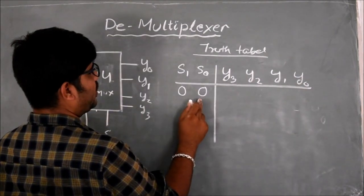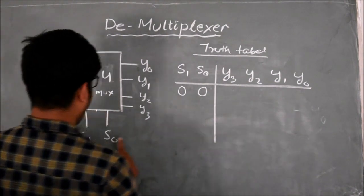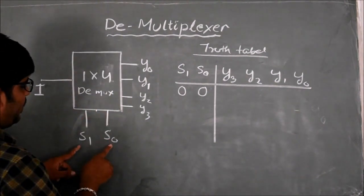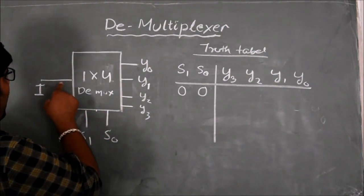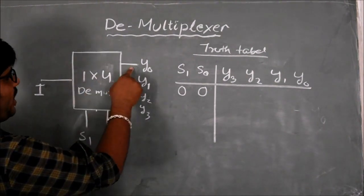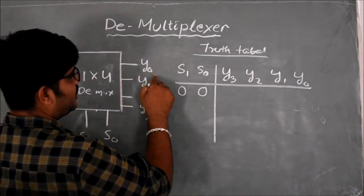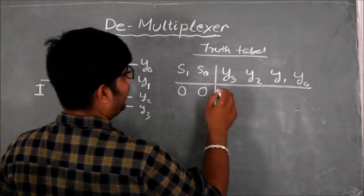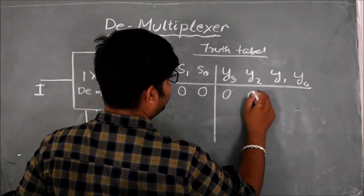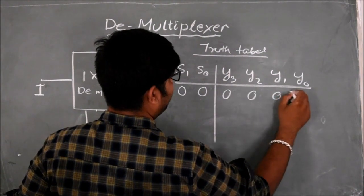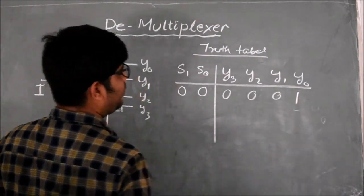For the 0, 0 combination, when S0 is 0 and S1 is 0, the input I is routed to Y0. So Y0 goes high, meaning Y0 is 1 while all others are 0.